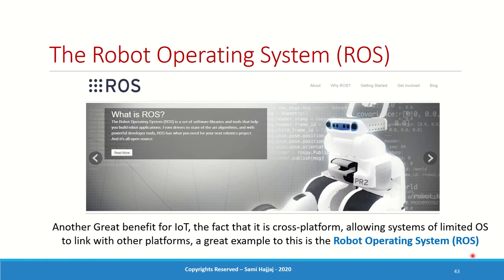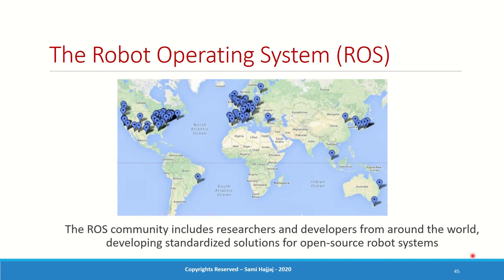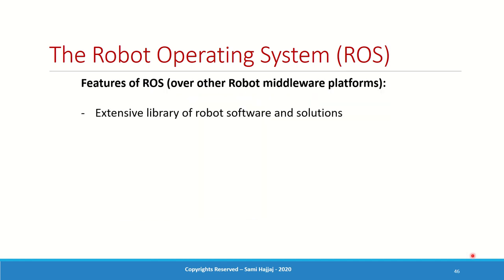The Robot Operating System, or ROS, is not really an operating system like Windows or Mac — think of it as a collection of applications that allows you to work with hardware called a robot. It's an open-source platform for developing high-end robot software. The ROS community includes researchers, developers, and industry professionals from around the world developing standardized open-source solutions for robot systems. It has an extensive library of robot software and solutions — image processing, navigation, manipulator control, pick and place — all available for you to read, use, tinker with, and contribute to.